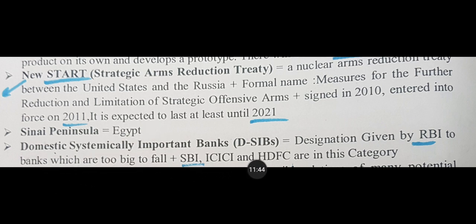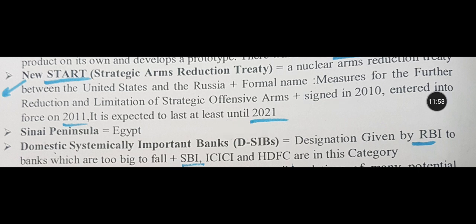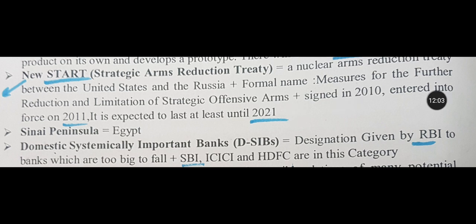Domestic Systemically Important Banks — D-SIBs. There are also Global Systemically Important Banks at the world level, but in India the designation is domestic. RBI designates certain banks as 'too big to fail' — meaning if they fail, the total economy would collapse. Currently there are three D-SIBs in India: SBI, ICICI, and HDFC.